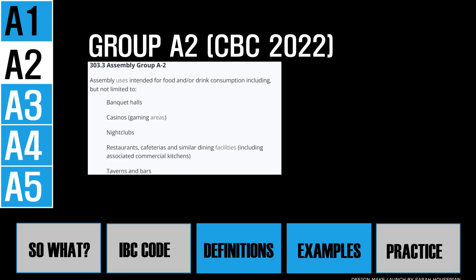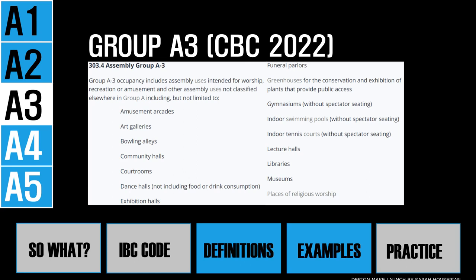A3 occupancies are assembly areas that do not fit into the other A groups. These include religious or worship areas, recreation, or amusement. A library is classified as A3, but not a bookstore — if a facility sells books, that would be classified under the M (mercantile) occupancy.